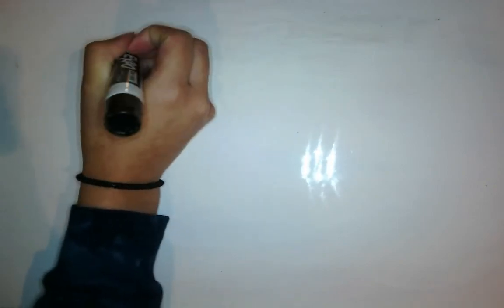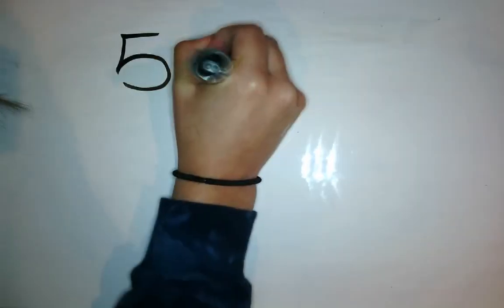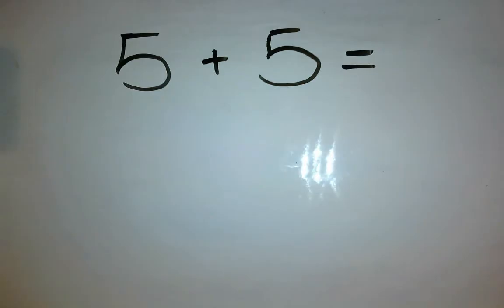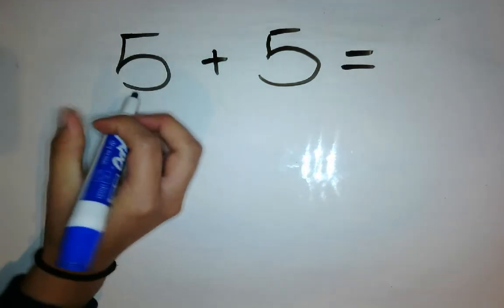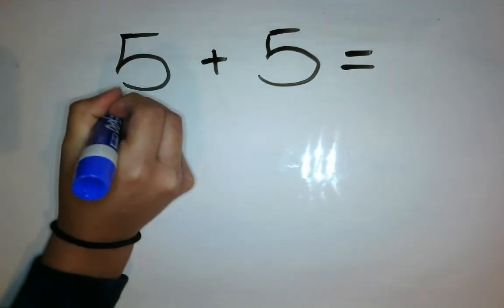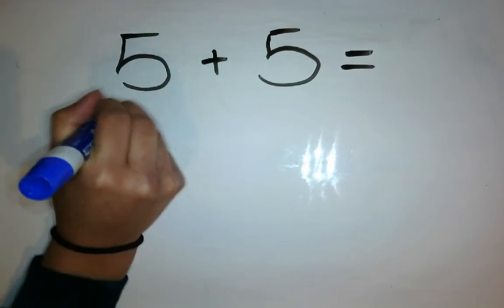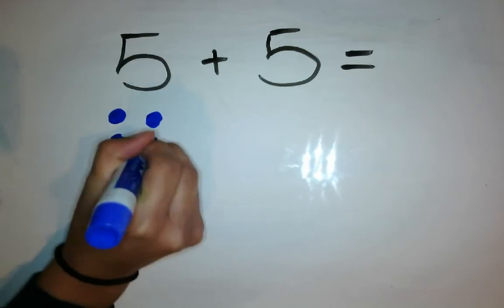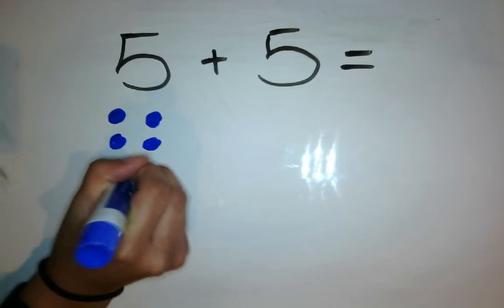Alrighty. Let's solve the problem 5 plus 5 equals. Alright, like I did before, we're going to get out our different colored markers. I need how many? 5 dots. 1, 2, 3, 4, 5.